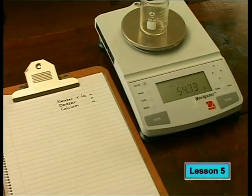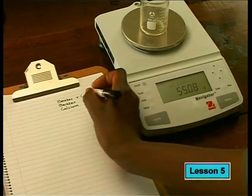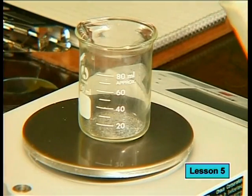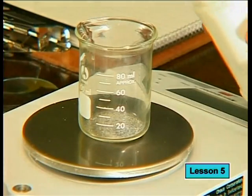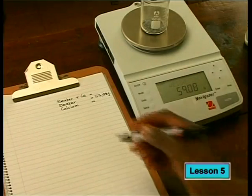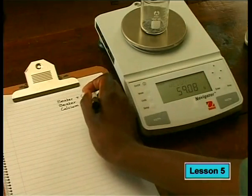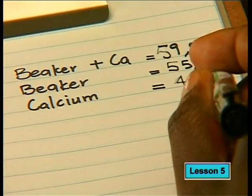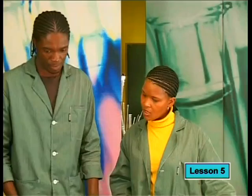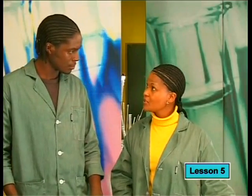Let's do this quantitative investigation by measuring out an exact mass of calcium on the chemical balance. First I find the mass of the beaker and record it. Next I add a sample of calcium into the beaker and record this reading too. To find the mass of the calcium, we subtract the mass of the beaker from the mass of the beaker and calcium — so the mass of the calcium is 4.0 grams.